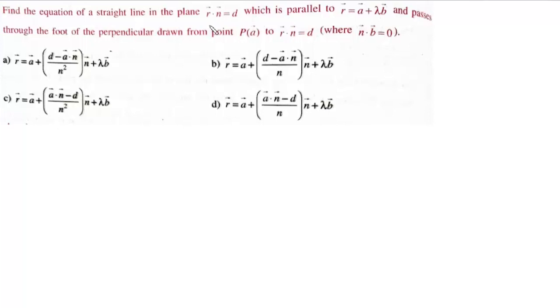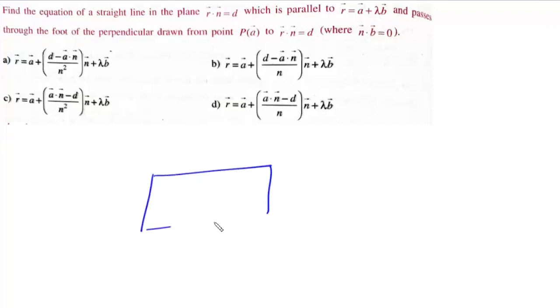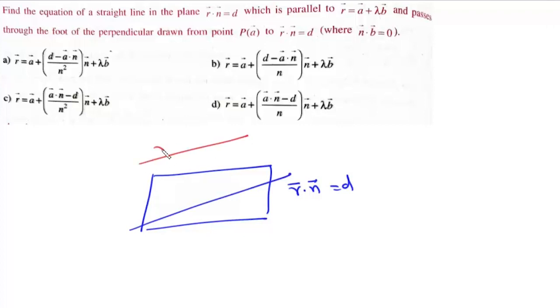Find the equation of a straight line in the plane r·n = d which is parallel to the line r = a + λb and passes through the foot of perpendicular drawn from point a to this plane.